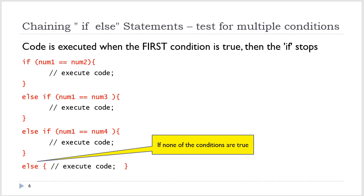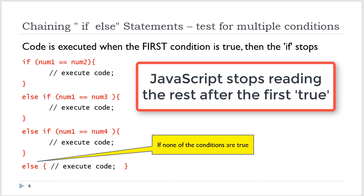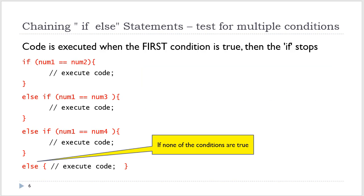Here we are testing for multiple conditions. I would also like to emphasize: when the first true occurs — meaning the first condition returns true — JavaScript exits this block of code. It does not read any further. Therefore, if you have a true further on, it's never going to get there. So make sure that you test every condition to ensure there are no logical errors in your code.